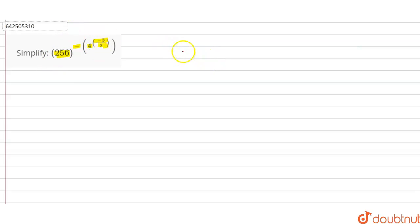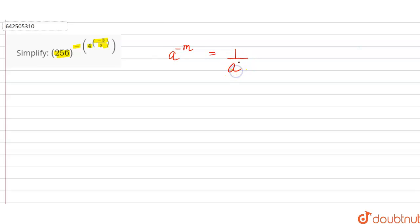Now, the law of exponents says that a raised to the power minus m means 1 by a raised to the power m. So if there is any power in negative, we can reciprocate the power.